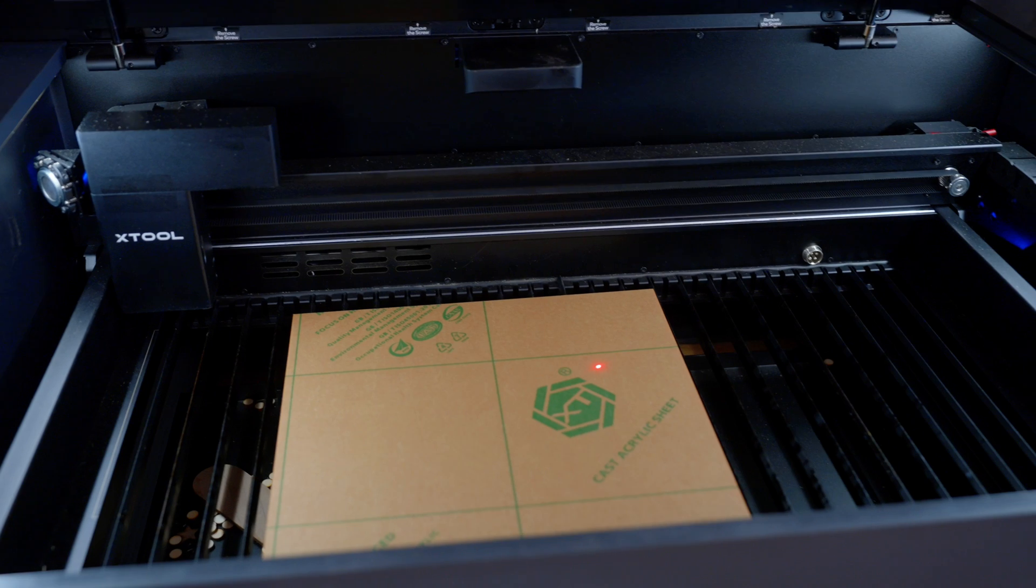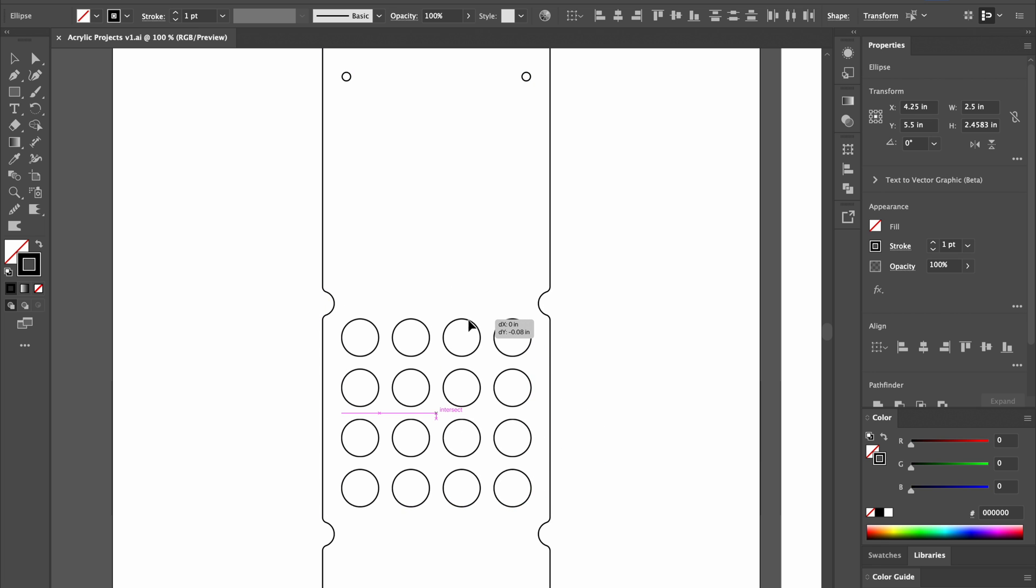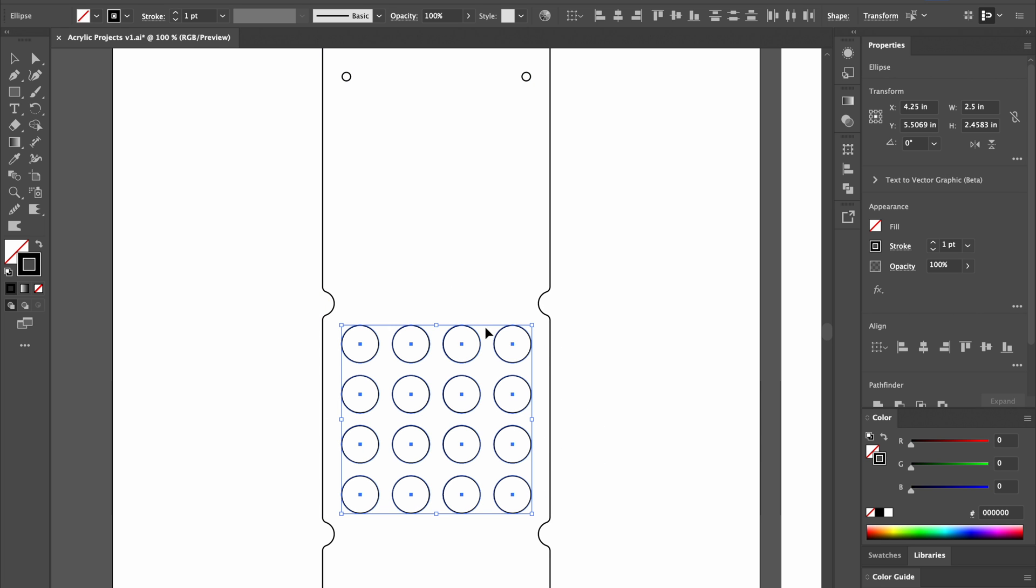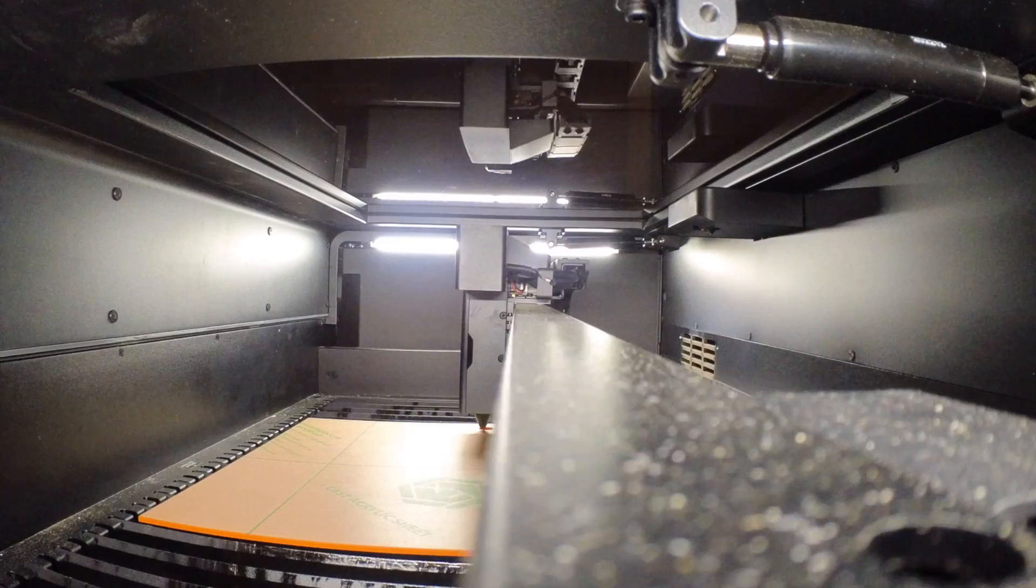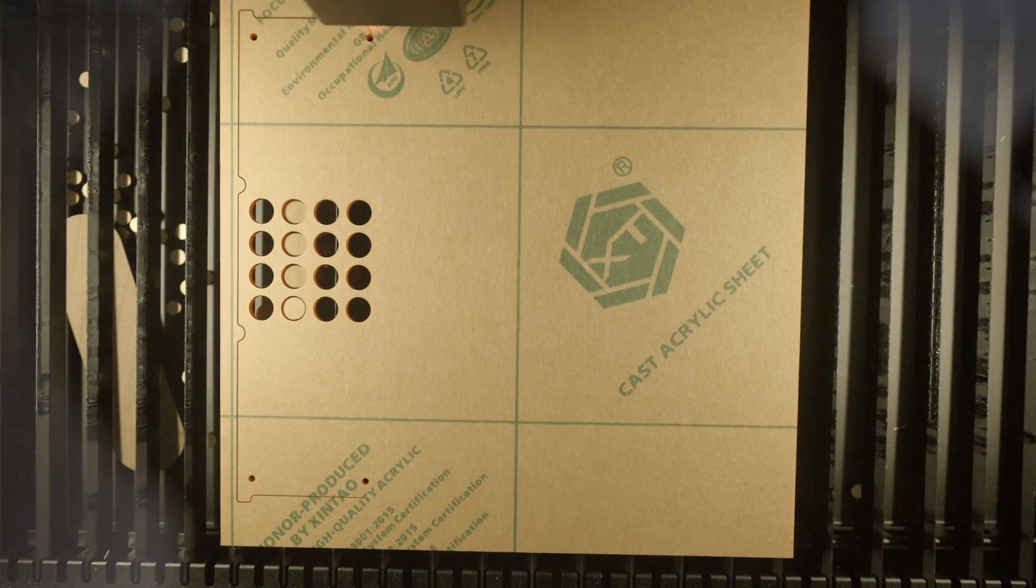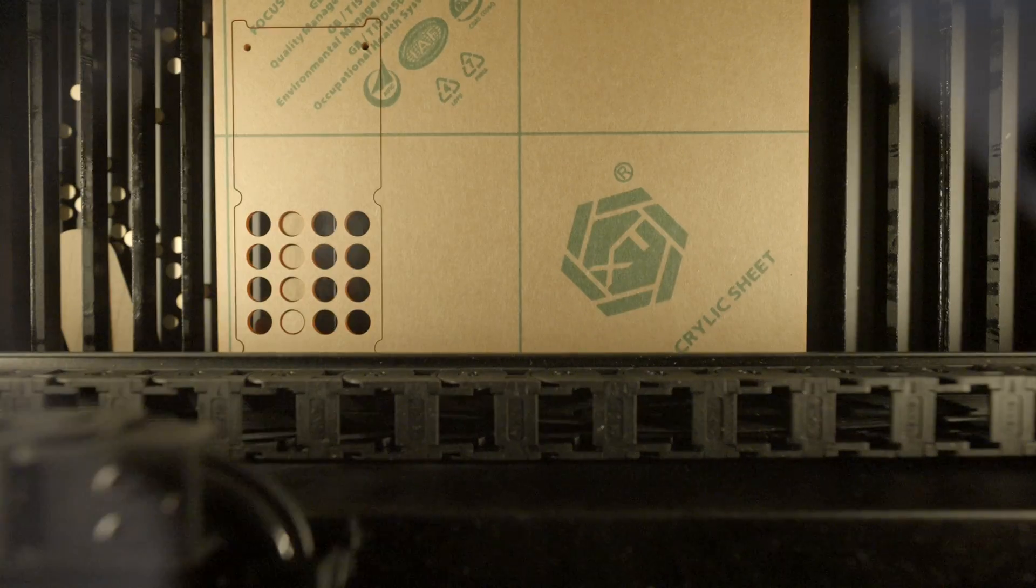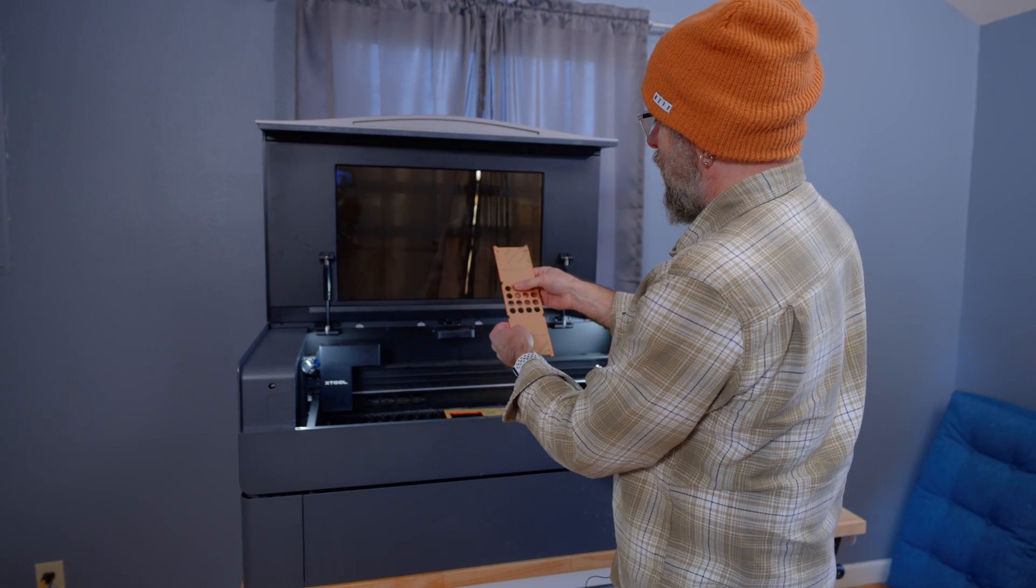So we're just going to throw that in the bed there. Most of these designs I drew up in Adobe Illustrator. Some I drew up right in the X-Tool software. I will have free SVG files down below. So let's hit the button and start cutting. That took about two minutes to cut out. There it is. Still got the protective cover on there.